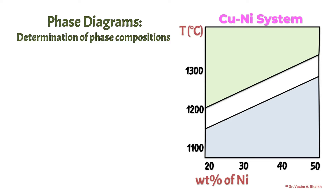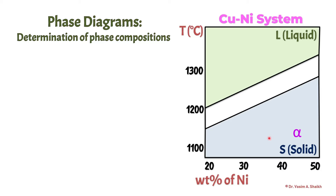On the y-axis, we have the temperature starting from 1100, 1200 to 1300. The green area is the liquid phase, the blue area is the solid phase, also called the alpha phase. In between, we have a phase field of liquid plus alpha. If you are in this area, we have a phase field which is a combination of both the liquid and solid phases.